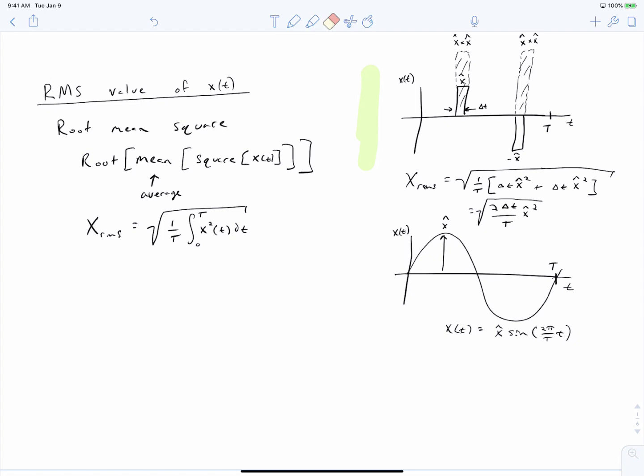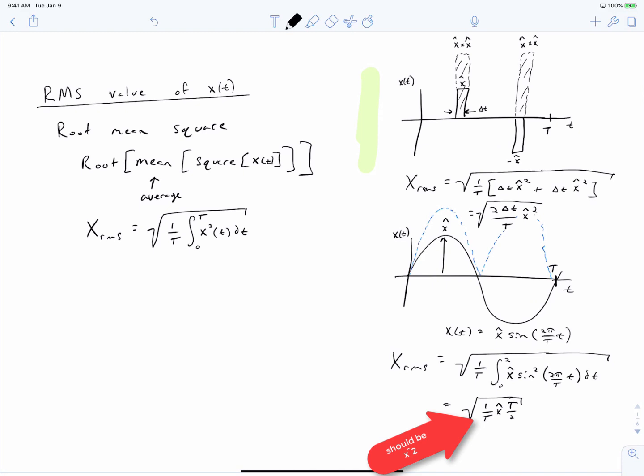We can then calculate the RMS value of a sine wave. So, calculating the average of the square of our sine wave, we see that this is the function that we are integrating. Conceptually, we are taking the average of this value that I am indicating in blue. If we evaluate this integral,